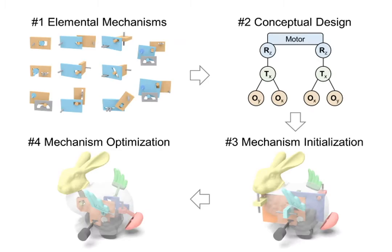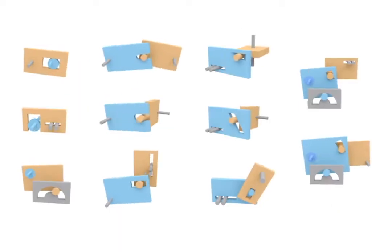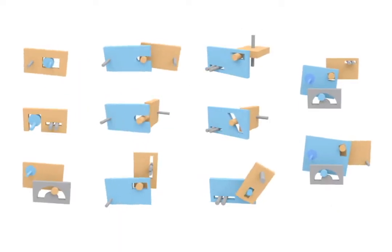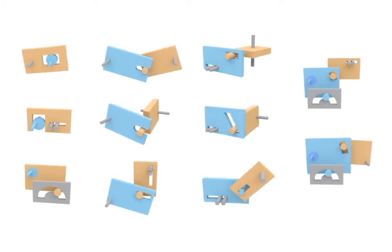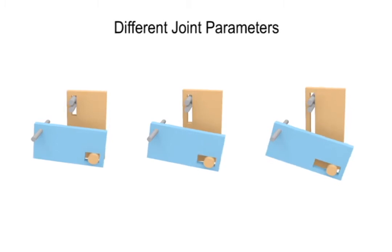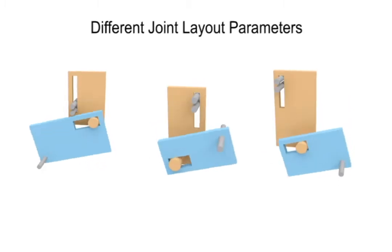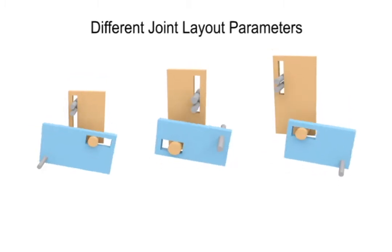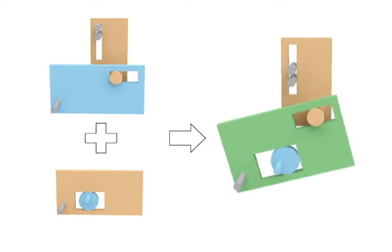Our system has four technical components. First, the elemental mechanisms. We identify 11 elemental mechanisms that are commonly found in wind-up toys and analytically model their geometry, kinematics, and connections.